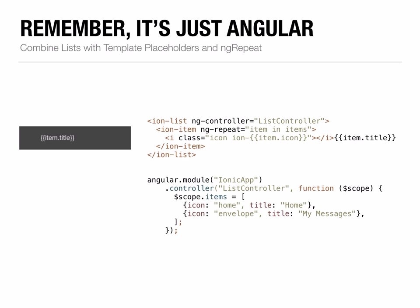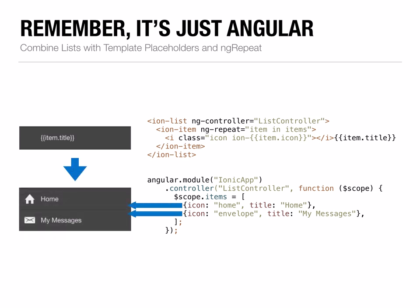Remember, it's just Angular under the hood. So you'll probably make liberal use of ng-repeat in your lists to define dynamic content. Inside my list controller, I have a set of items defined on the scope — each with an icon and a title. In my template, I've defined one list item with an ng-repeat directive and a few placeholders. And boom — Angular binds your data to your list, giving you a dynamically generated list based on the data in your scope.